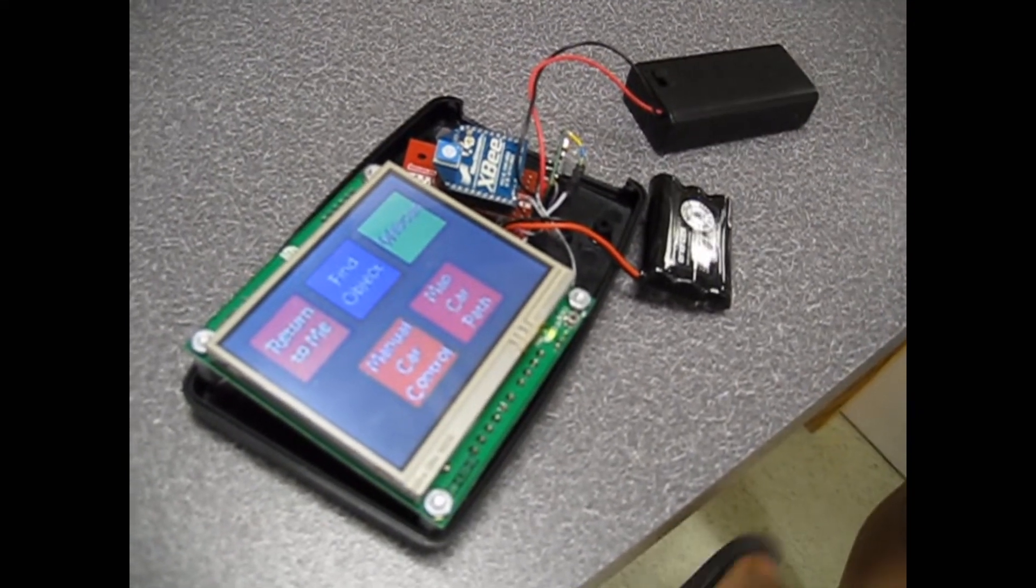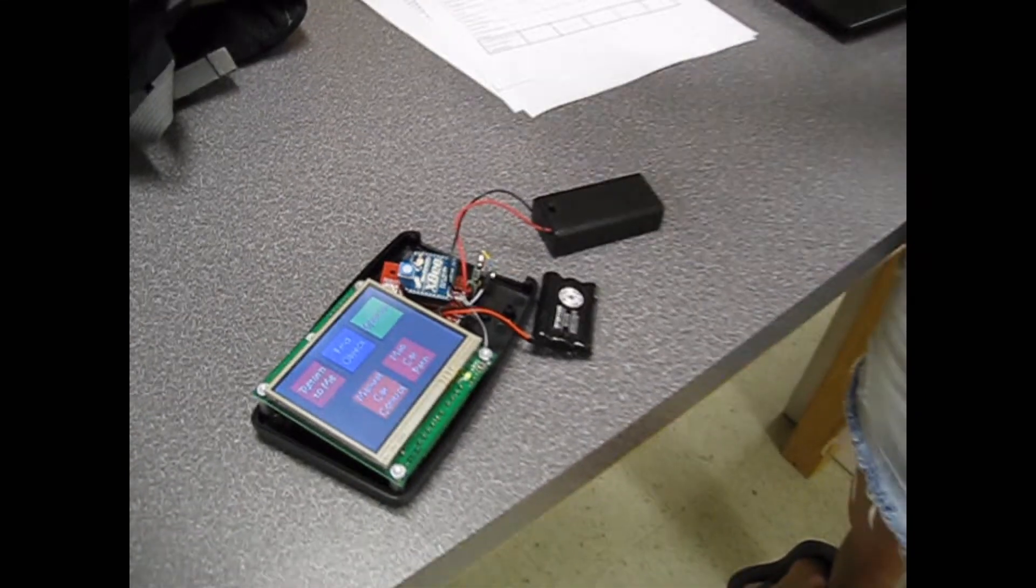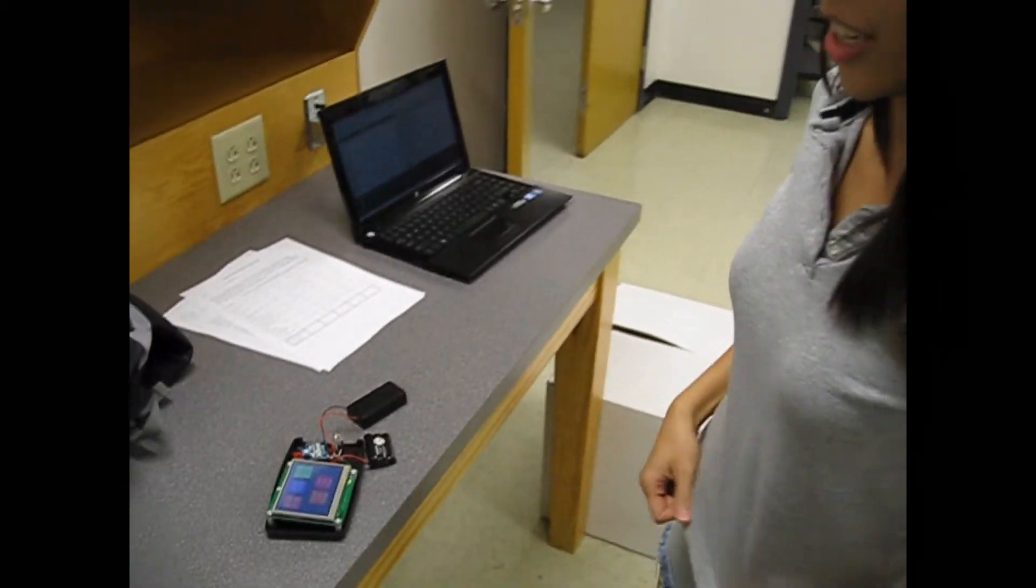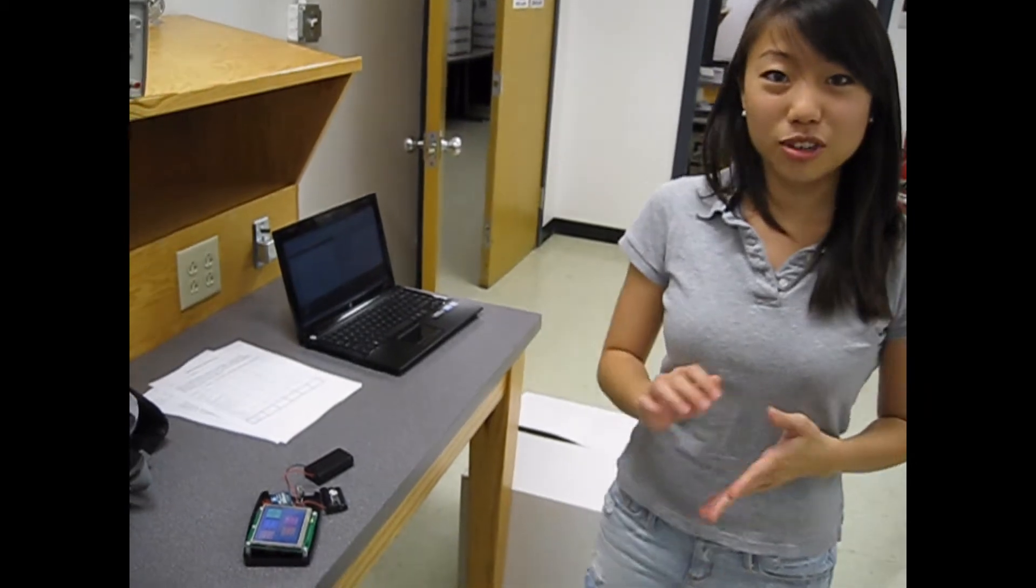And so the goal of this system, which we named the FAR system, which stands for Find and Return, is for the autonomous robotic car to navigate to a transmitter or to the controller using RDF or radio direction finding.